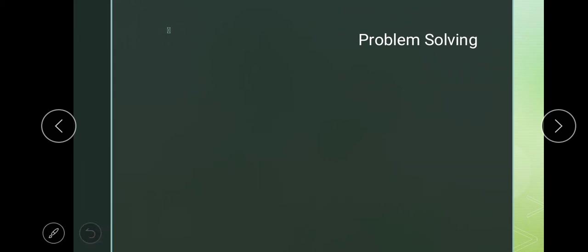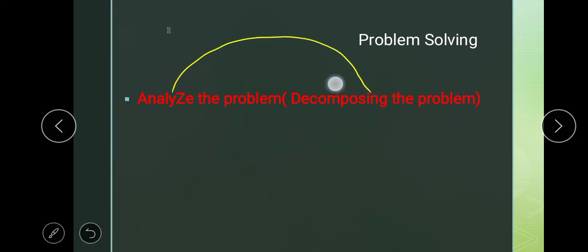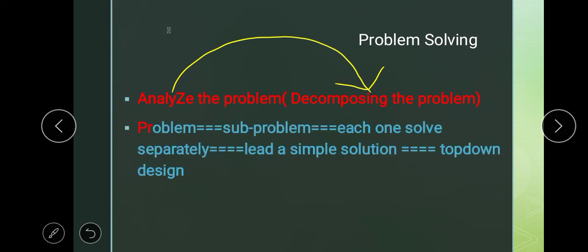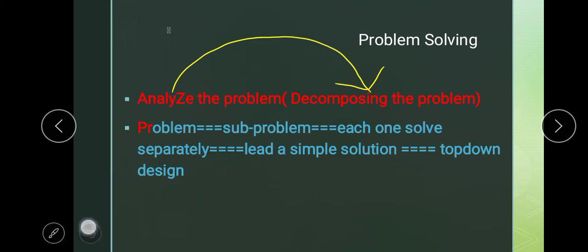The third stage is analyze the problem. Analyze the problem means dividing or decomposing your problem into sub-problems. We decompose and break a bigger problem into smaller sub-problems. After solving each sub-problem separately, when we have a simple solution, we can get a complete solution. This is the technique we use in analyze the problem — we decompose the problem into sub-problems.